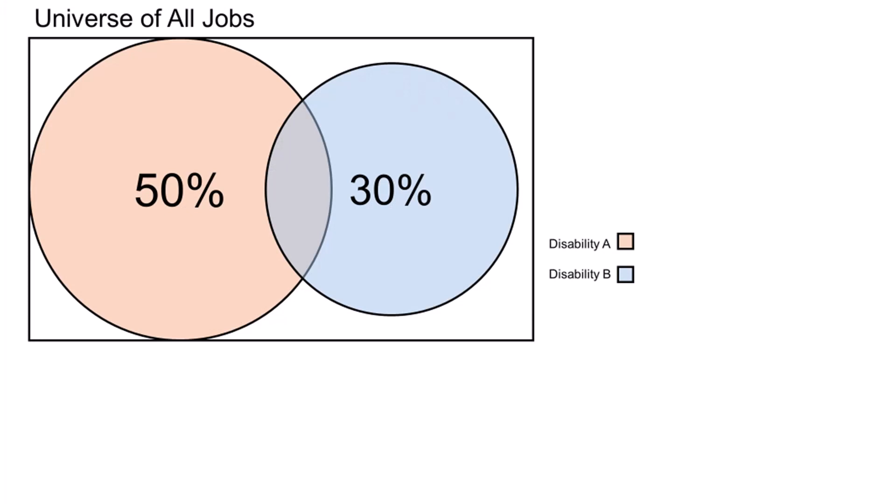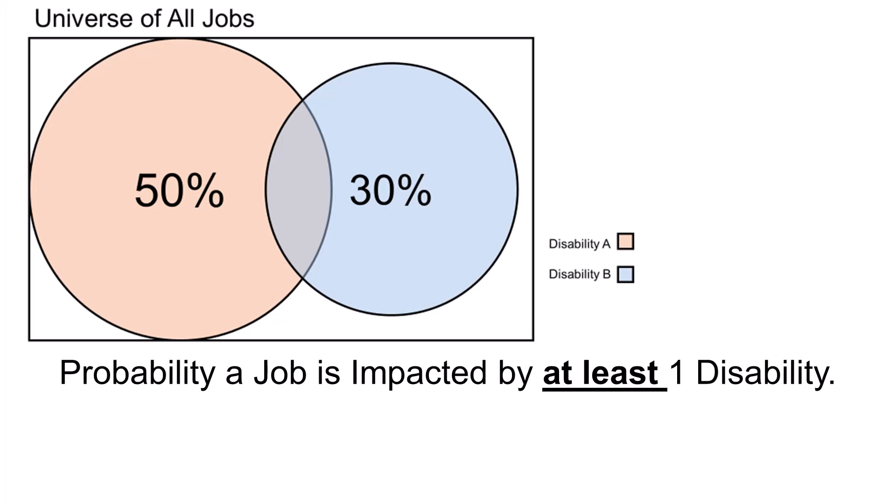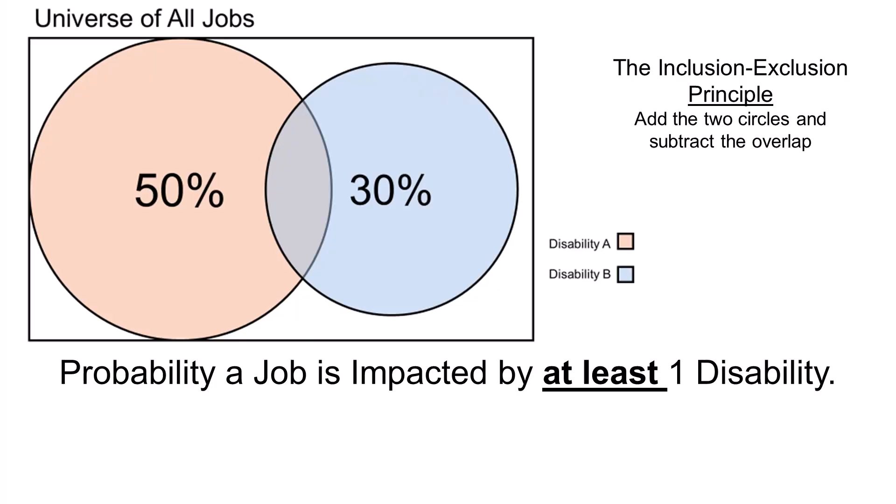And if you want to know the odds that some random job is impacted by at least one of these disabilities, you use a principle that the statisticians call the inclusion-exclusion principle. You've got 50% plus 30% minus the product of 50% and 30%. And that gives you 65%. So you get the same answer that you get by following the by the book approach and by using the calculator on the VA website.